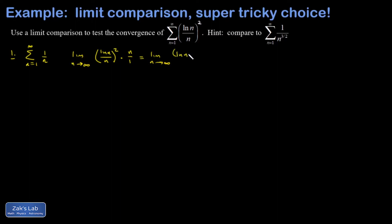And I can clean things up a little bit. I get natural log of n all squared divided by n squared, but one of those is going to cancel with the one in the numerator. So I end up with a divided by n.